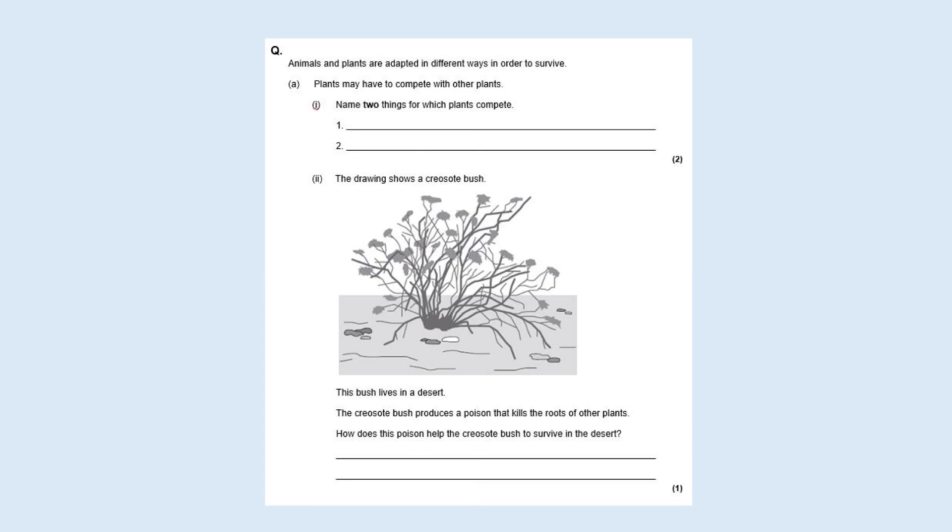It says animals and plants are adapted in different ways in order to survive. Plants may have to compete with other plants. It says name two things for which plants compete, so that's really about photosynthesis. Then the next question says the drawing shows a creosote bush. Again you don't need to know anything about creosote bush because it gives you some information. It tells you this bush lives in a desert, which means it's very dry. The creosote bush produces a poison that kills the roots of other plants, so it's obviously got some form of poisons to outcompete other plants to ensure they get the water. Then how does this poison help the creosote bush to survive in the desert? Again I'd like you to pause and have a go at these questions.